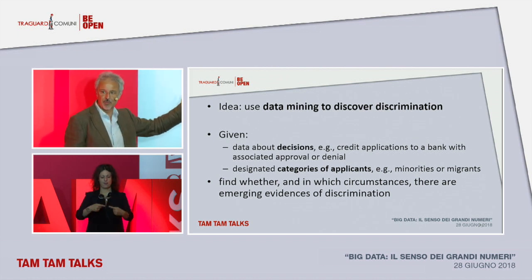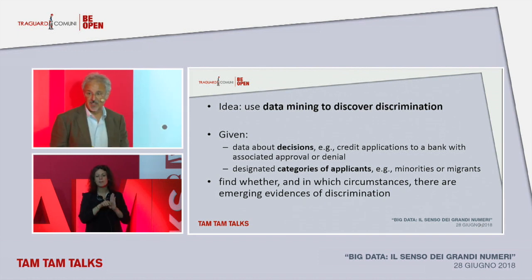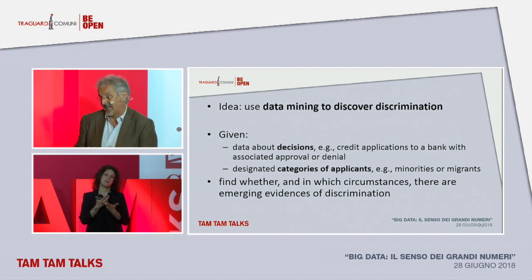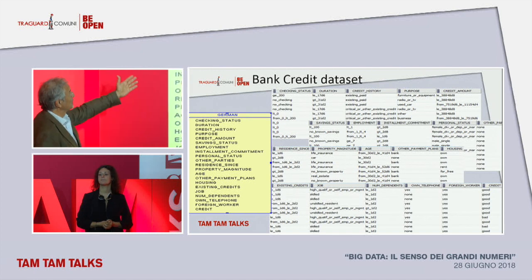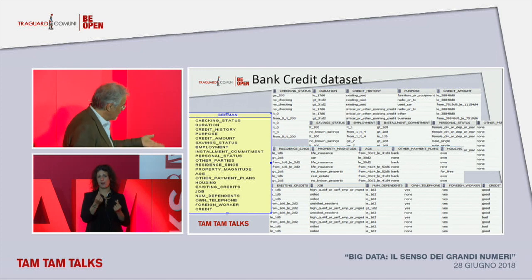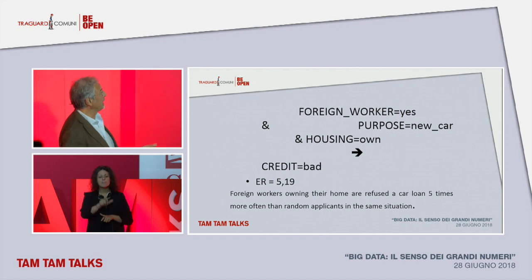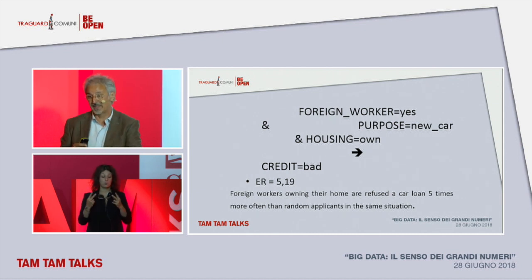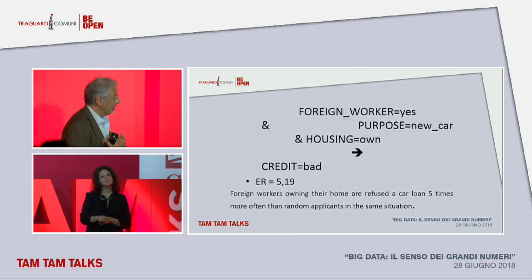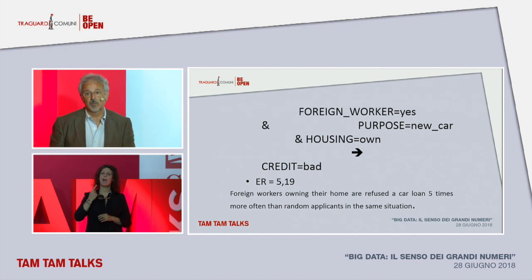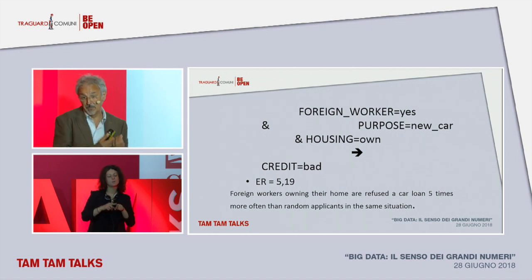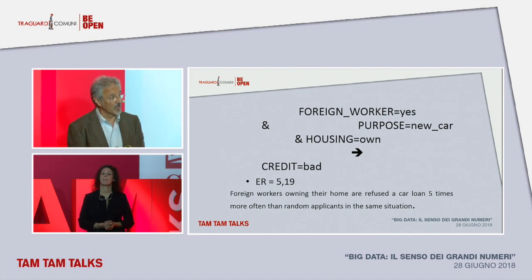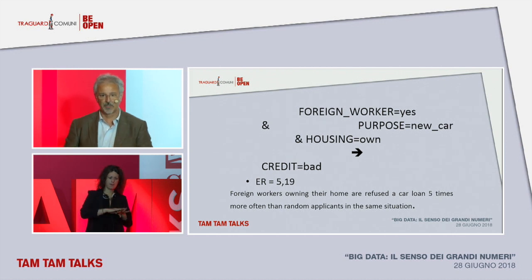This is a problem we can fight against. We can fight against machine learning with machine learning. We must do data mining to discover decisions — collect data about decisions, understand the logic beneath them with a constraint that the model is interpretable and understandable. For example with credit data, people that ask for a loan at a bank — you can discover a rule, not created beforehand but discovered by the system: foreign workers are refused loans to buy a car five times more than other random people who ask for loans. We can apply this reasoning to decisions based on algorithms, human decisions, or a combination of the two.